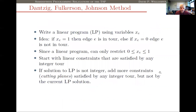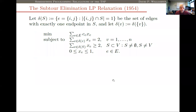Let me quickly go through the methodology. The idea is that we're going to write down a linear program using variables x_e that stand for whether a given edge is in our tour or not. x_e should be one if the edge is in the tour, zero if it isn't. Since we're writing a linear program, we can only restrict that these variables lie between zero and one. We introduce a bunch of linear constraints satisfied by any integer tour, then solve that LP. If we get an integer solution, great — we've found the optimal tour. If not, we add more constraints, called cutting planes.